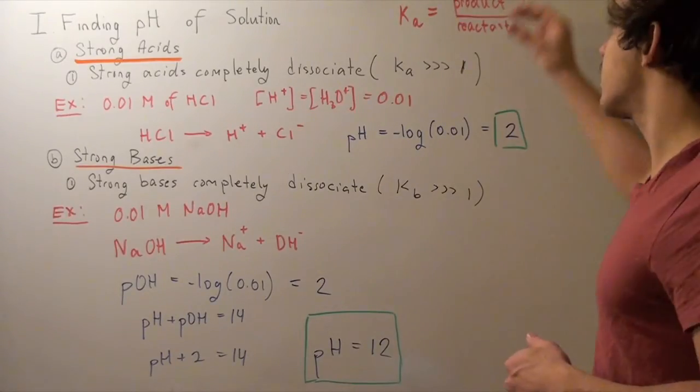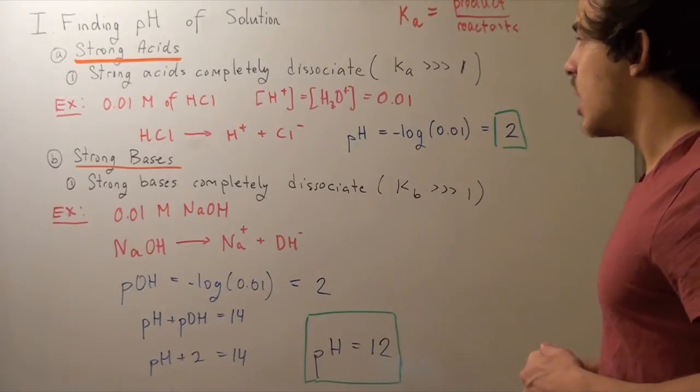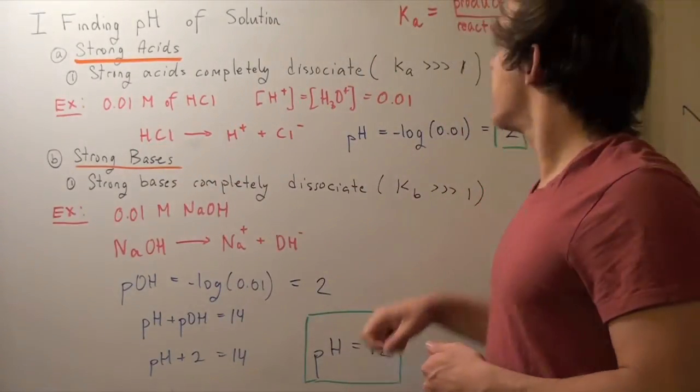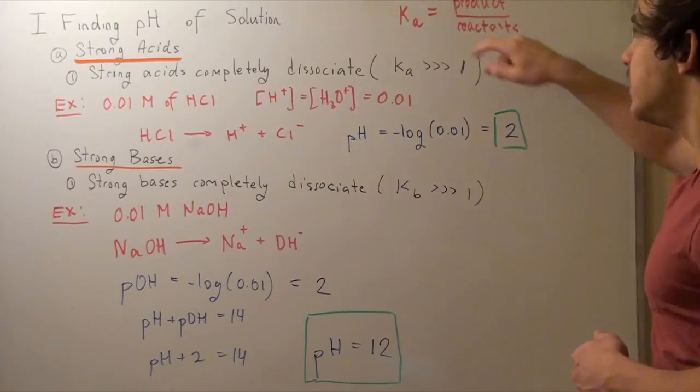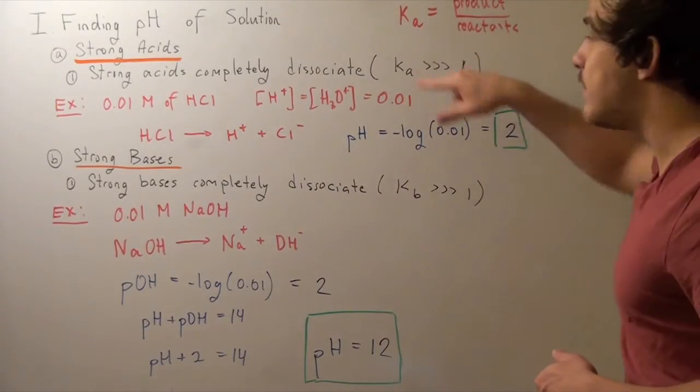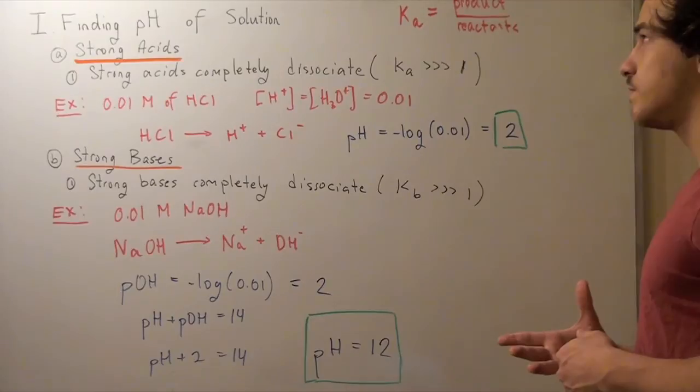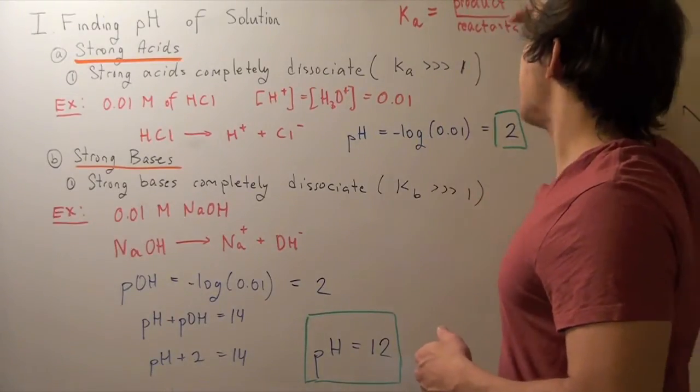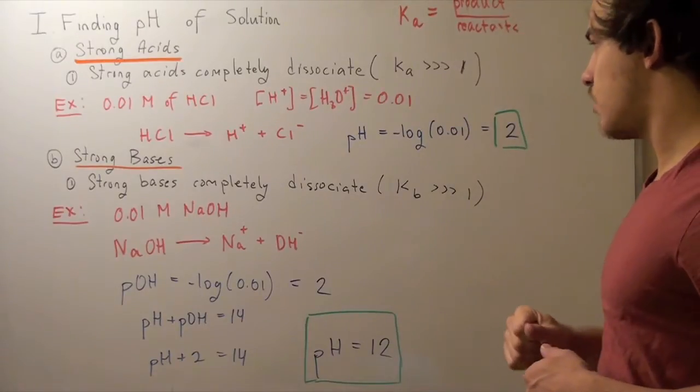what we see is that if this concentration goes to zero, then this denominator goes to zero, and our Ka becomes infinitely large. So that's why we don't know our Ka value, because we can't divide by zero.